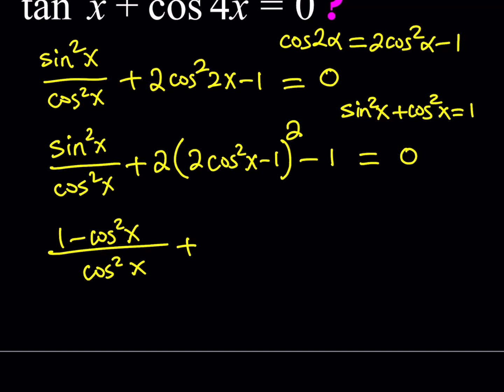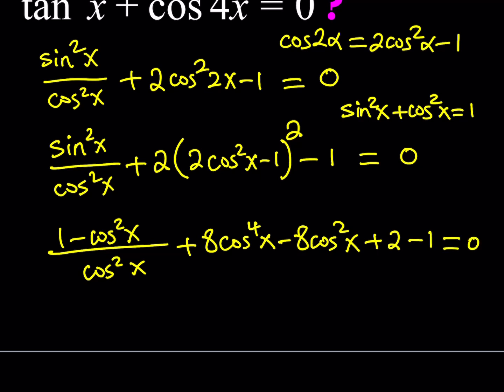Expanding the expression like a minus b quantity squared, I get 8 times cosine to the fourth power of x. In the middle, I get negative 8 cosine squared x. And the constant term gives 2, then minus 1, all equal to zero. Let's go ahead and simplify this into its simplest form.